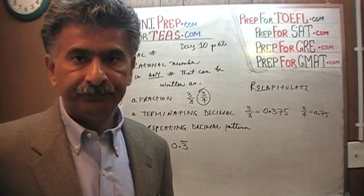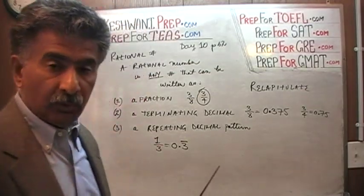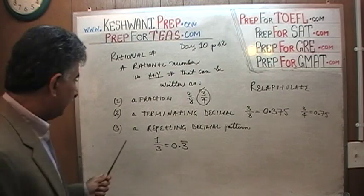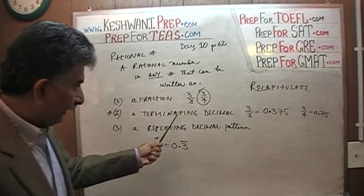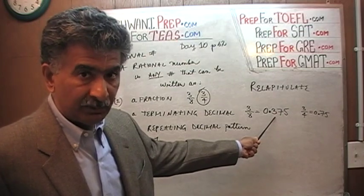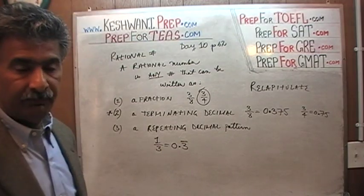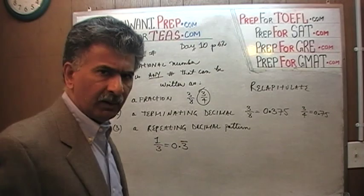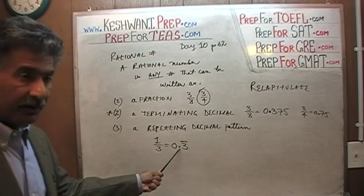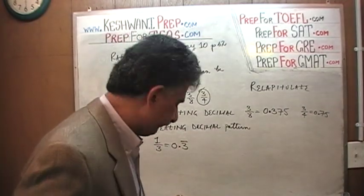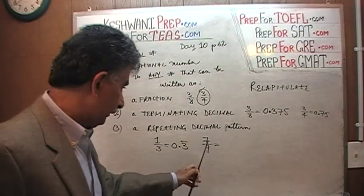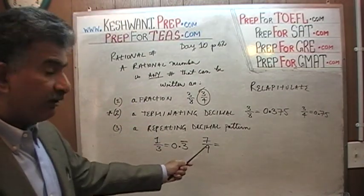0.3 repeating — that's how we show repeating — it's 0.33333... forever and ever. This is also a rational number because it can be written as a fraction. So as long as it has a repeating pattern of decimals, the decimal does not actually have to end. Just because it does not have a terminating decimal does not mean it's not rational. Even though it does not end, there is a pattern — and the pattern is very straightforward, it's just 3. Let's look at some other patterns. For example, 7/9 is a rational number for one very simple reason: it's written as a fraction. If you can write it as a fraction, the thing is rational.